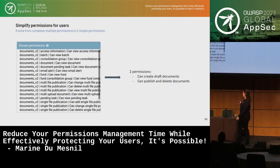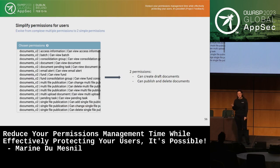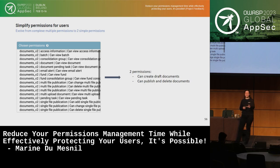This led us to simplify: all our document permissions were reduced to just two permissions — 'can create draft documents' for back-office users, and 'can publish and delete documents' for supervisors.